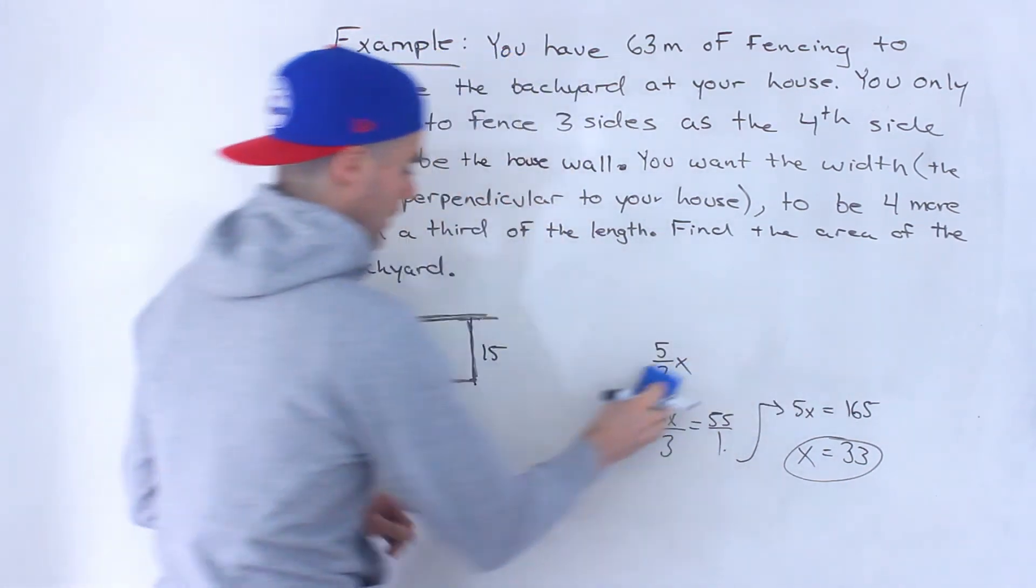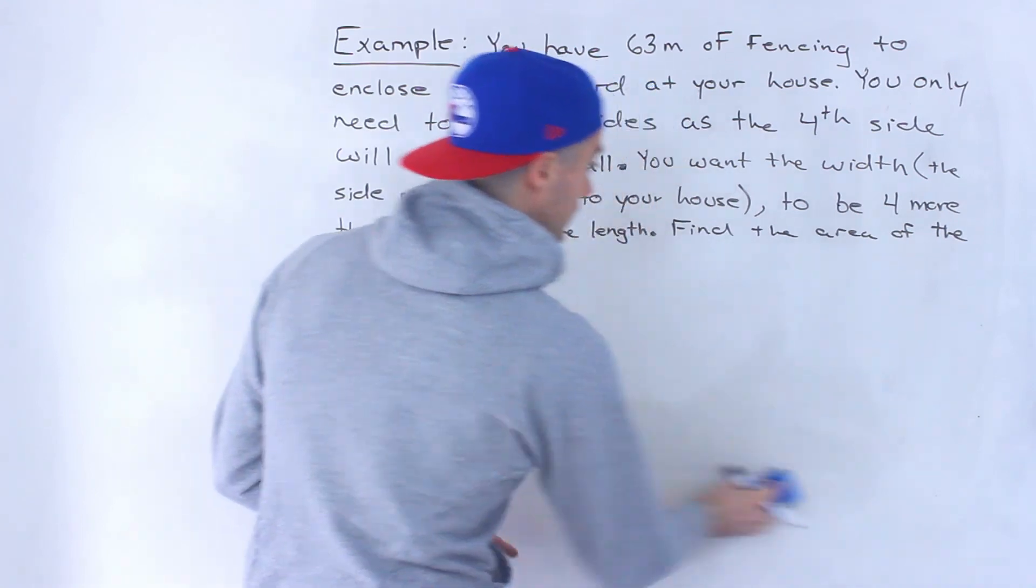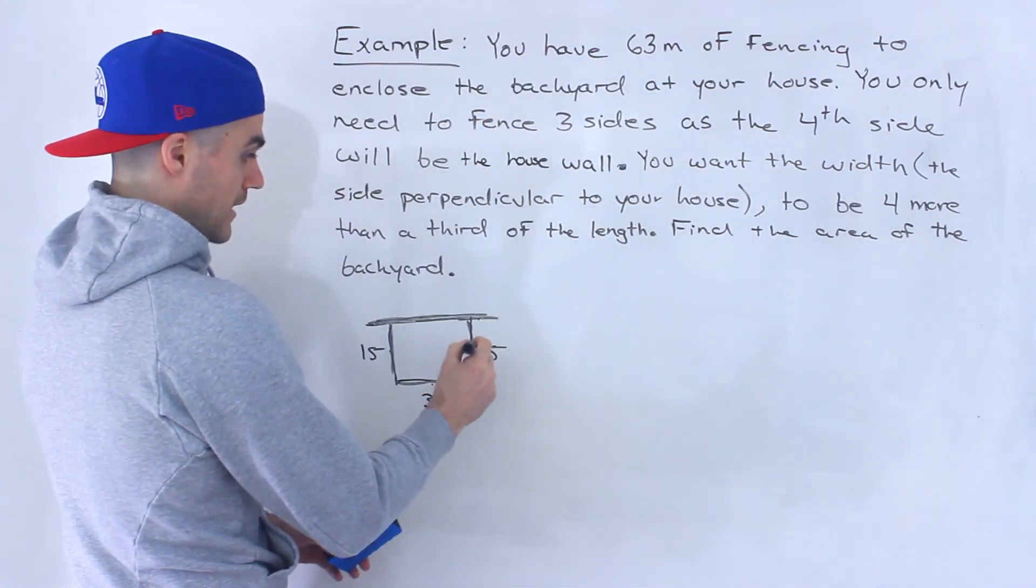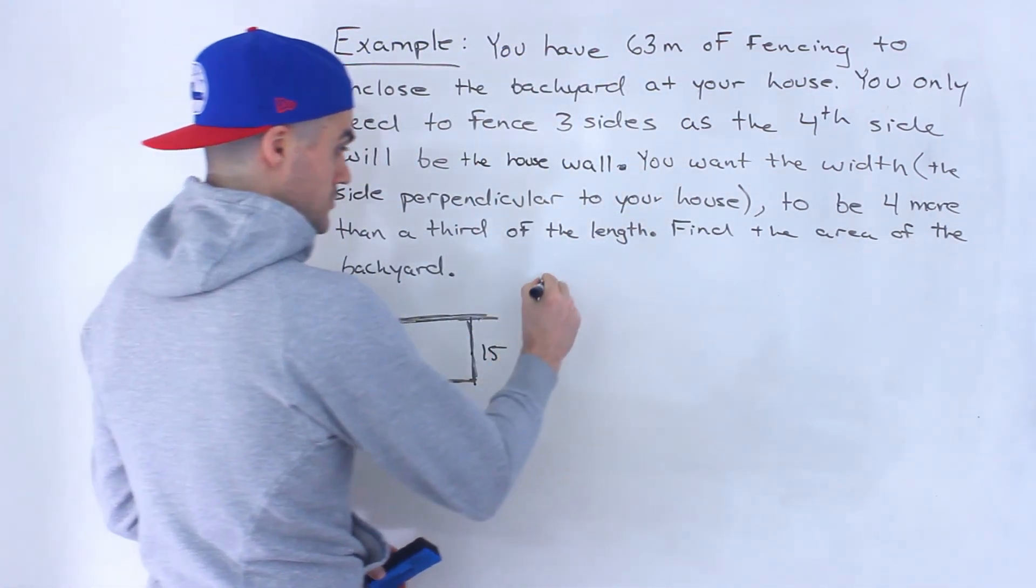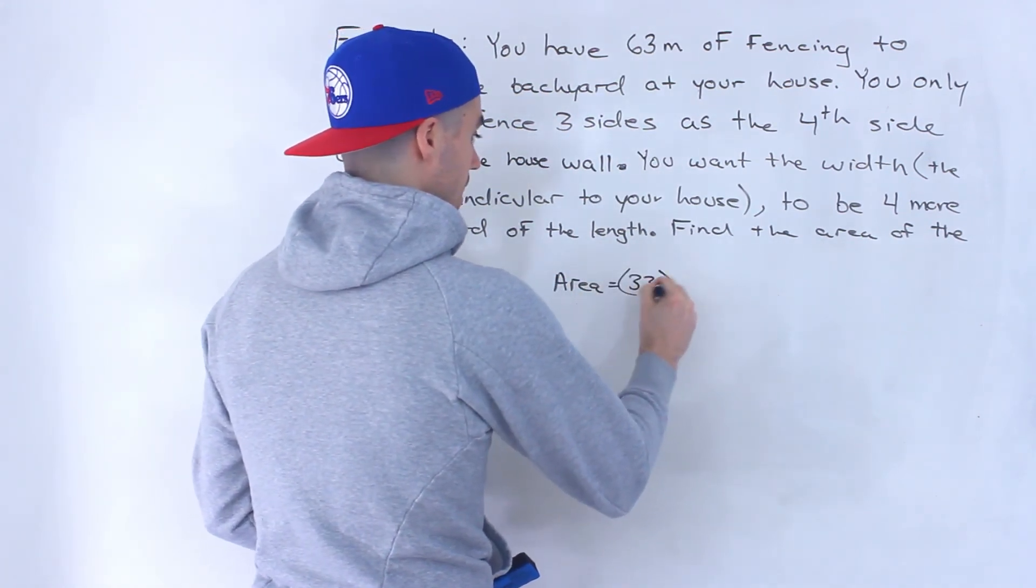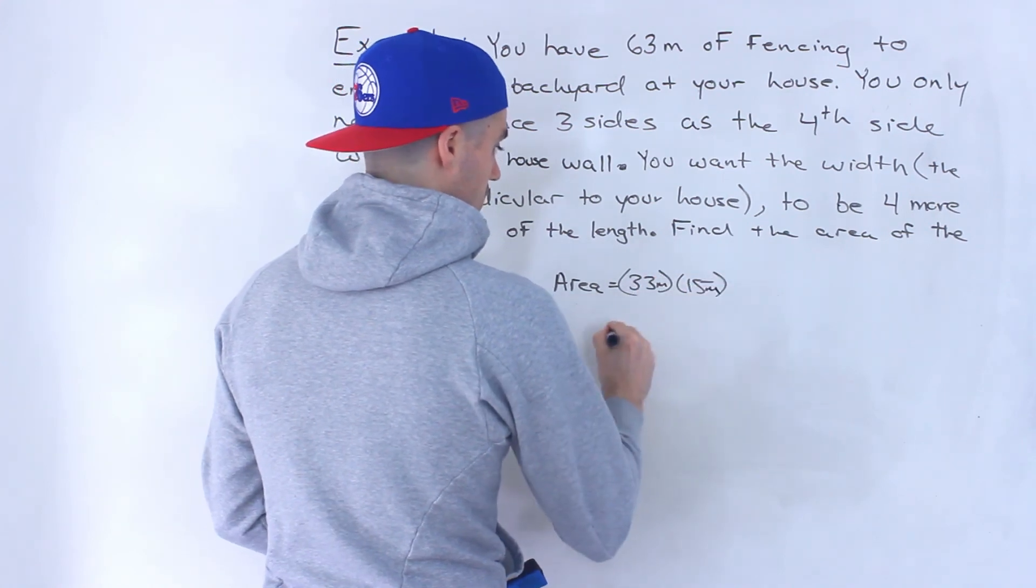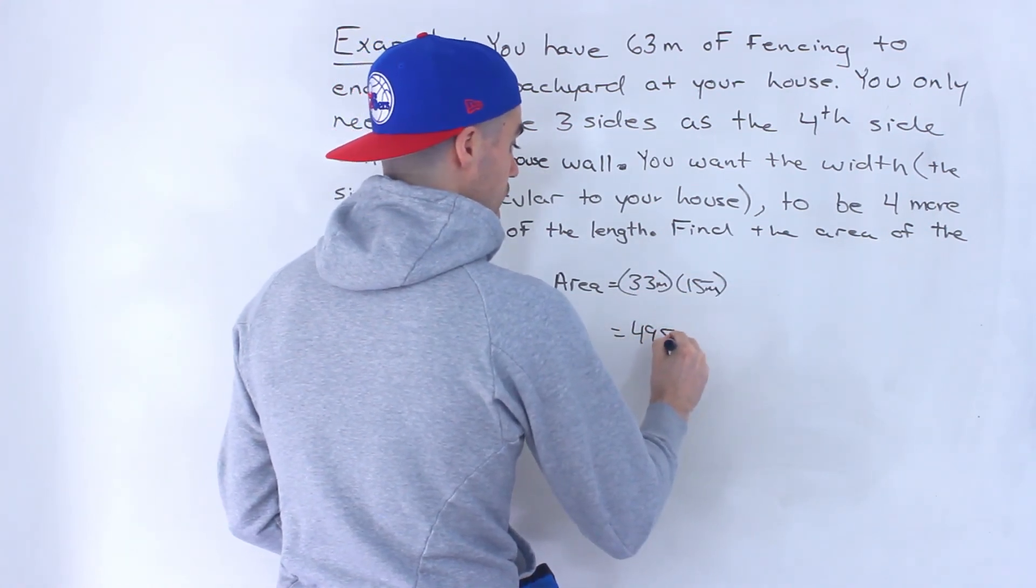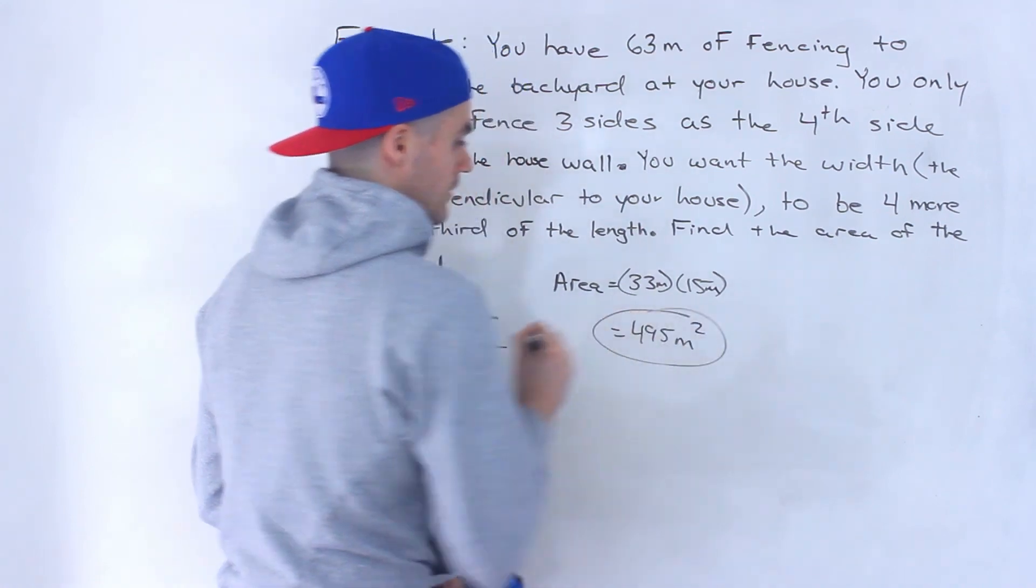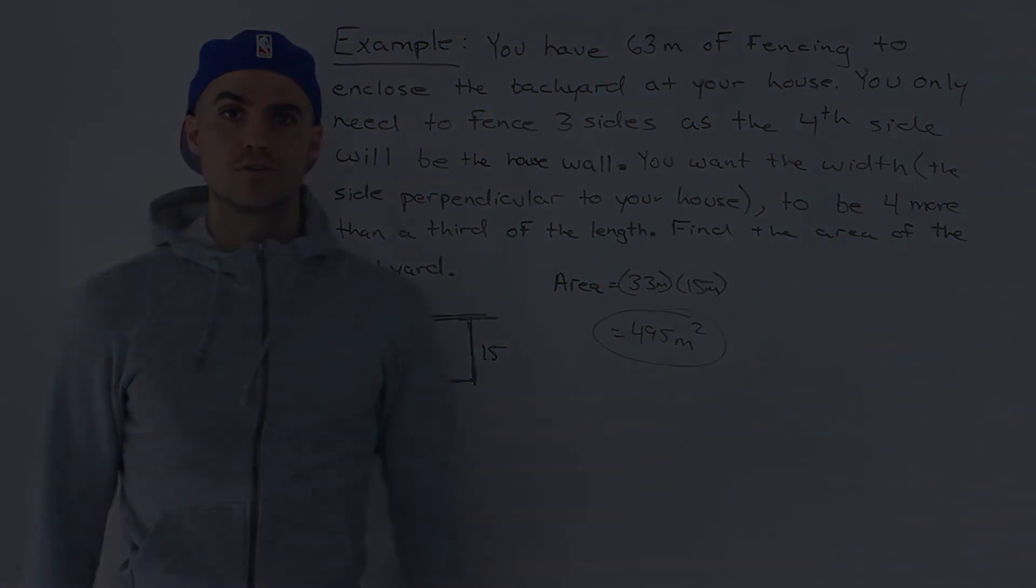But they're not asking for the dimensions. If they were asking for the dimensions, that's what the answer would be. They're asking for the area, right? And the area of the backyard would be length times width. So the area would be 33 times 15. These are in meters. So we would get 495 meters squared, right? So that ends up being the final answer to this question.